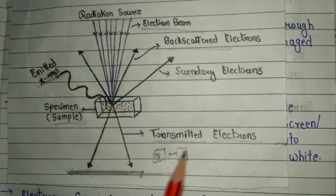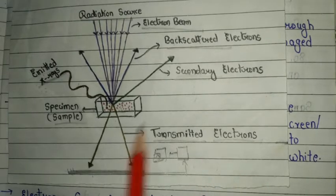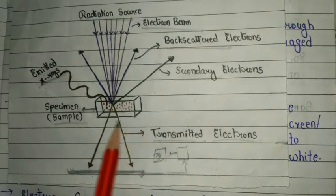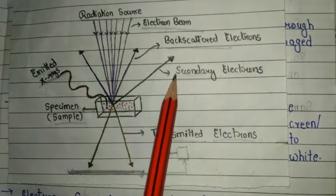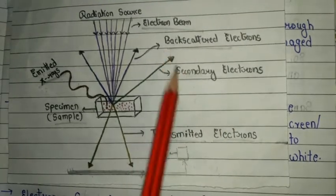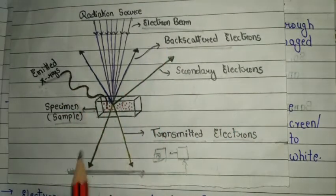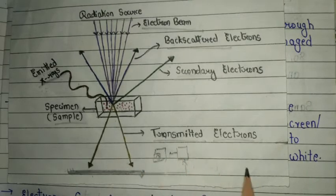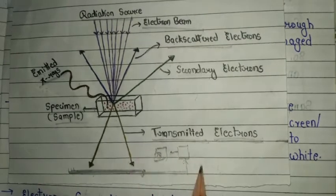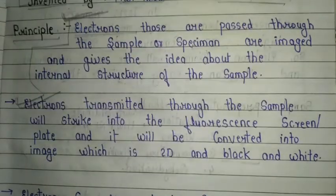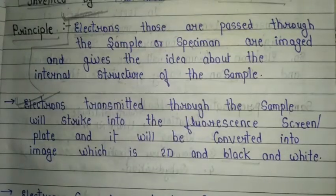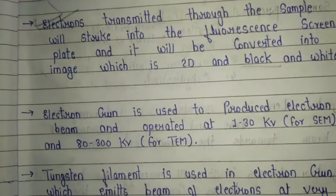In scanning electron microscopy, the image is obtained using three kinds of signals, whereas in transmission electron microscopy, the image is obtained using transmitted electrons. This is the basic principle of TEM.